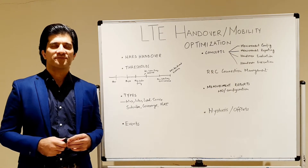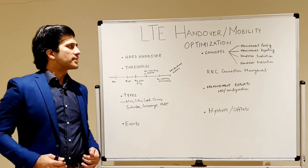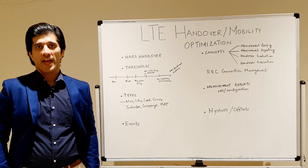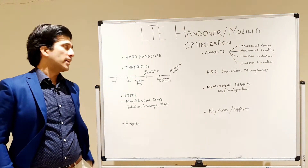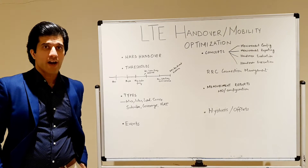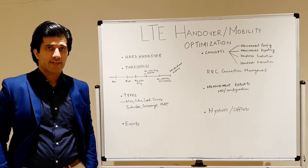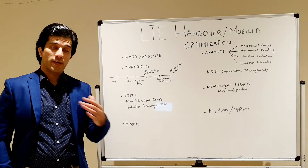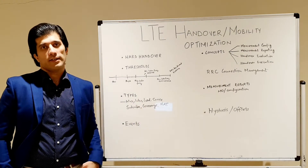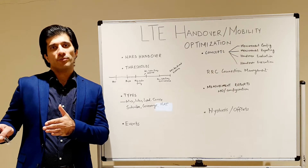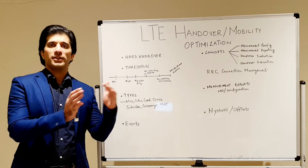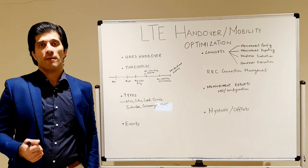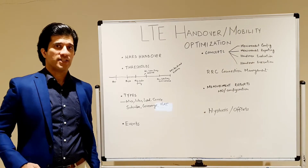The first thing to note in LTE is that, as compared to WCDMA where we have soft handover, in LTE we have a hard handover. A hard handover means that whenever a UE is handed over from one eNodeB to another eNodeB, the connection from the first eNodeB is broken and then the UE connects to the other eNodeB. So there is no soft handover as in WCDMA where we have the concept of an active set.